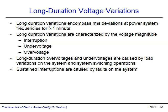Long duration voltage variations are defined as lasting longer than one minute. The type of voltage variation, whether an interruption, undervoltage, or overvoltage, is defined by the per unit voltage magnitude of the event, as discussed previously. Overvoltages and undervoltages are caused by large changes in load demand, or by system switching operations that connect or isolate significant portions of the power system. Long duration interruptions are caused by short-circuit faults on the system.